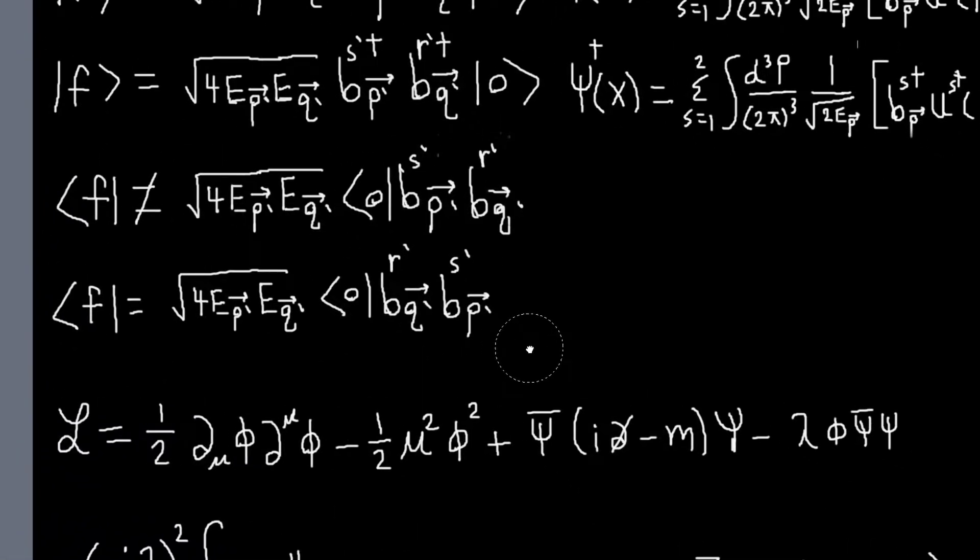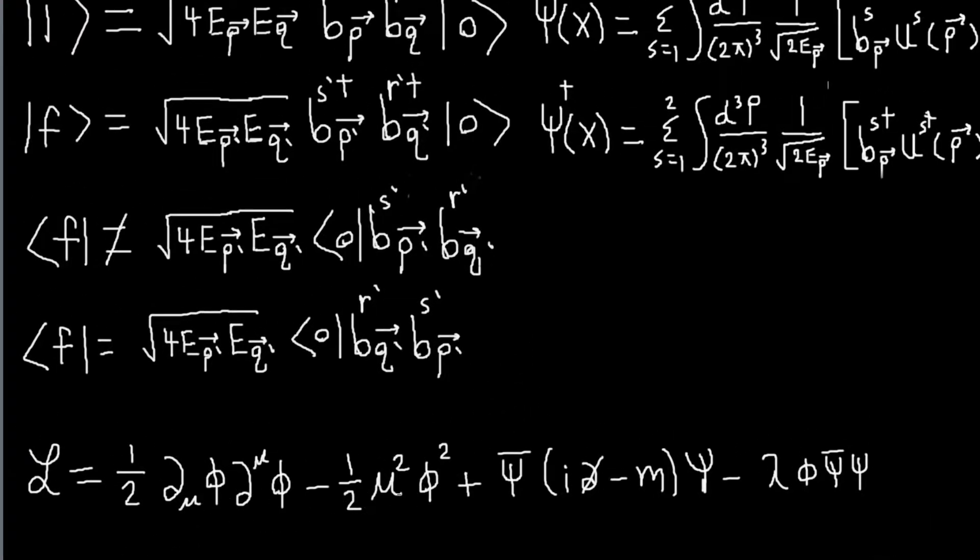And so again, our Lagrangian is going to look like this. It's basically just the free scalar field, and then the free Dirac field, and then this interaction term, the Yukawa interaction term.